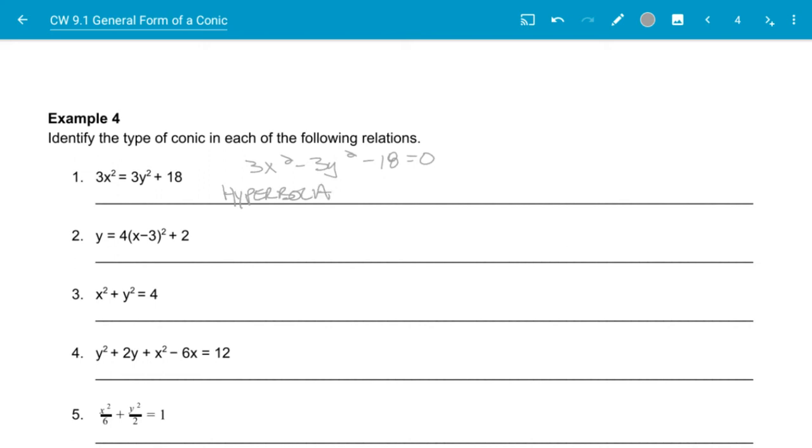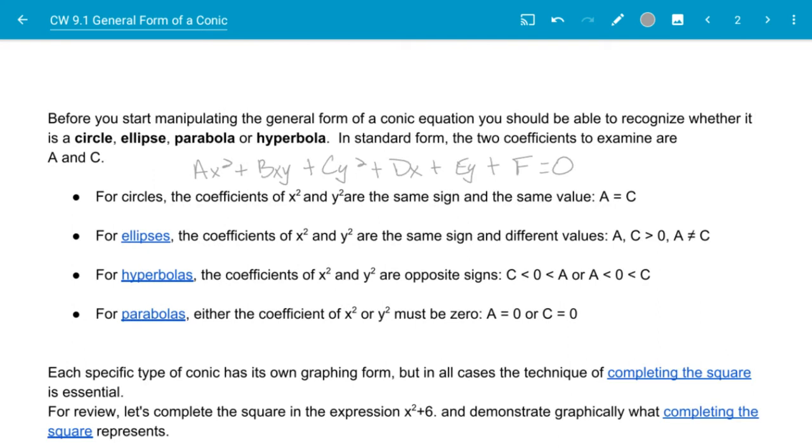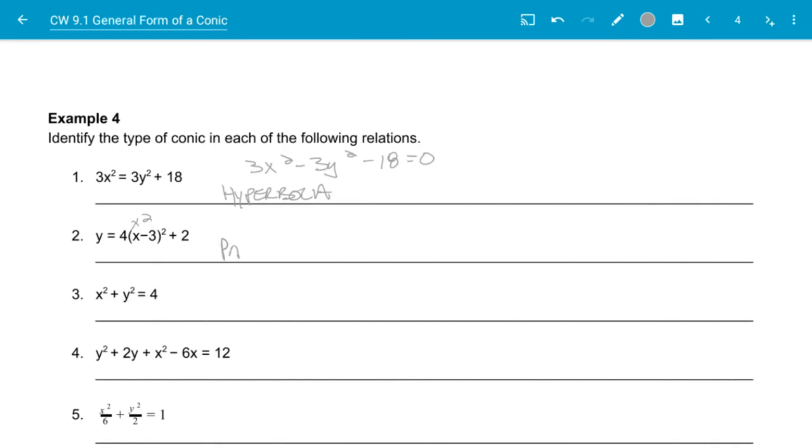So in the next one that we take a look at, in number two, I have, if I were to multiply this out, I will get x squared here being multiplied out. And that's the only square that I have. So then I have my y squared being 0. And when I have an x squared and the y squared being 0, then that will be a parabola to where the coefficient on the x squared or y squared must be 0. So number two is a parabola.